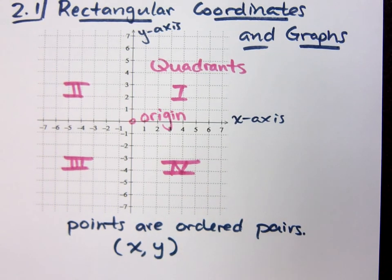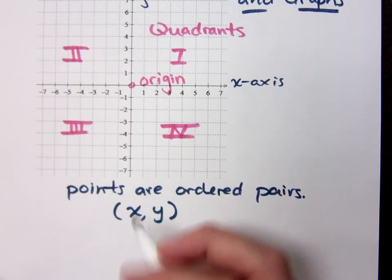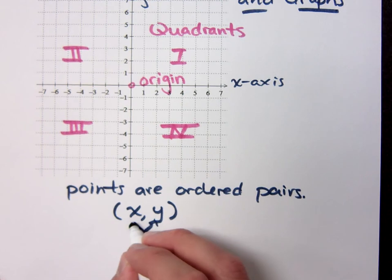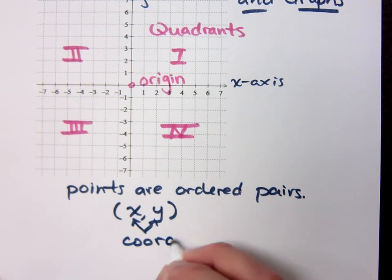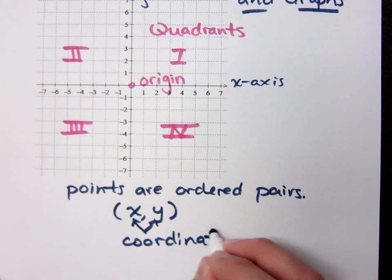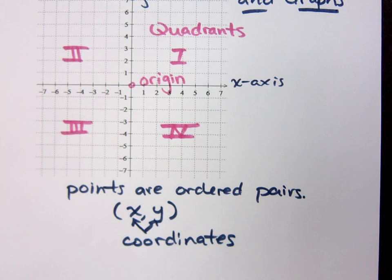What is each piece of the ordered pair called? What are these guys called? Domain and range? Nope. These are coordinates. Combined, they are coordinates. No, each one is a coordinate.